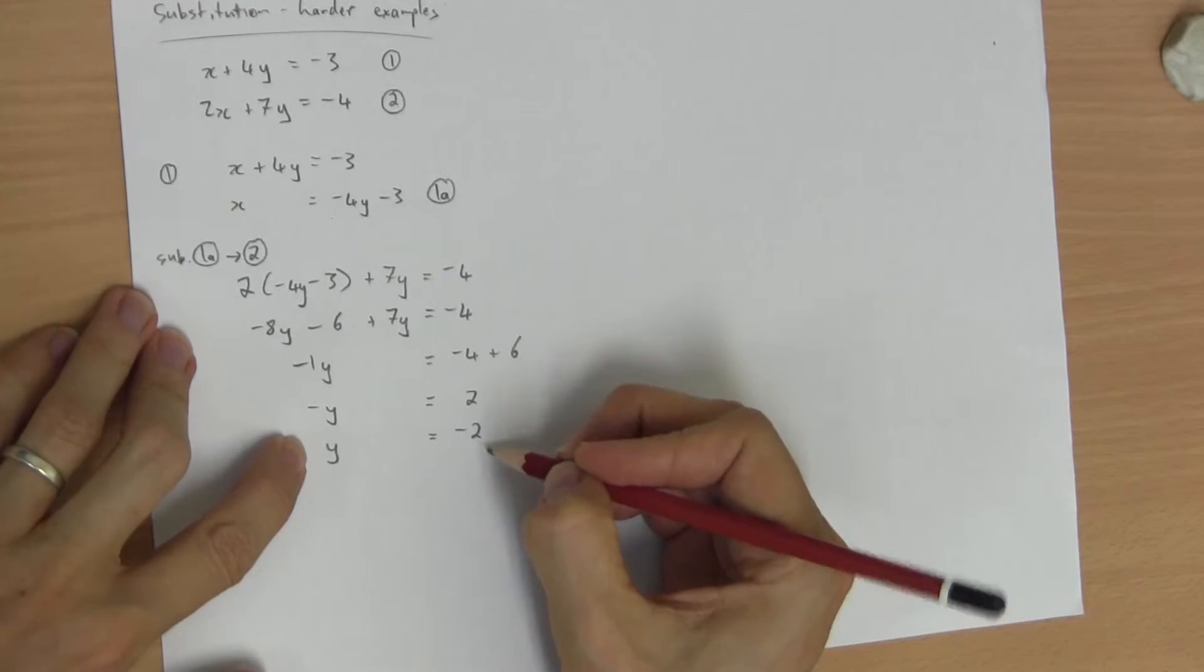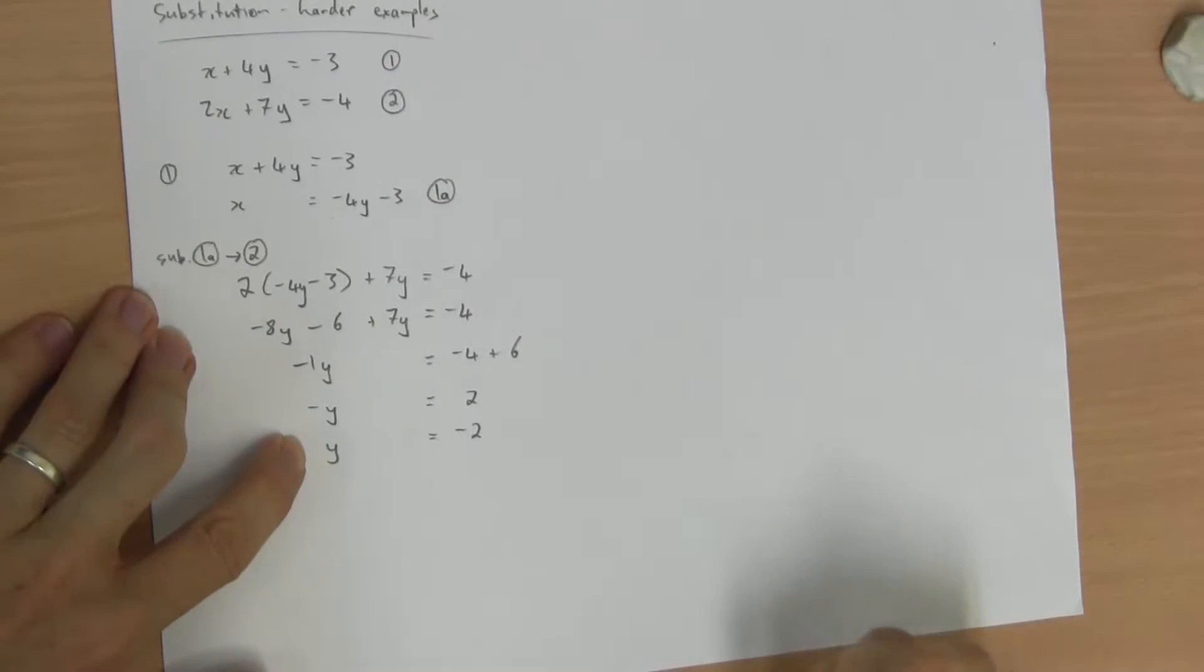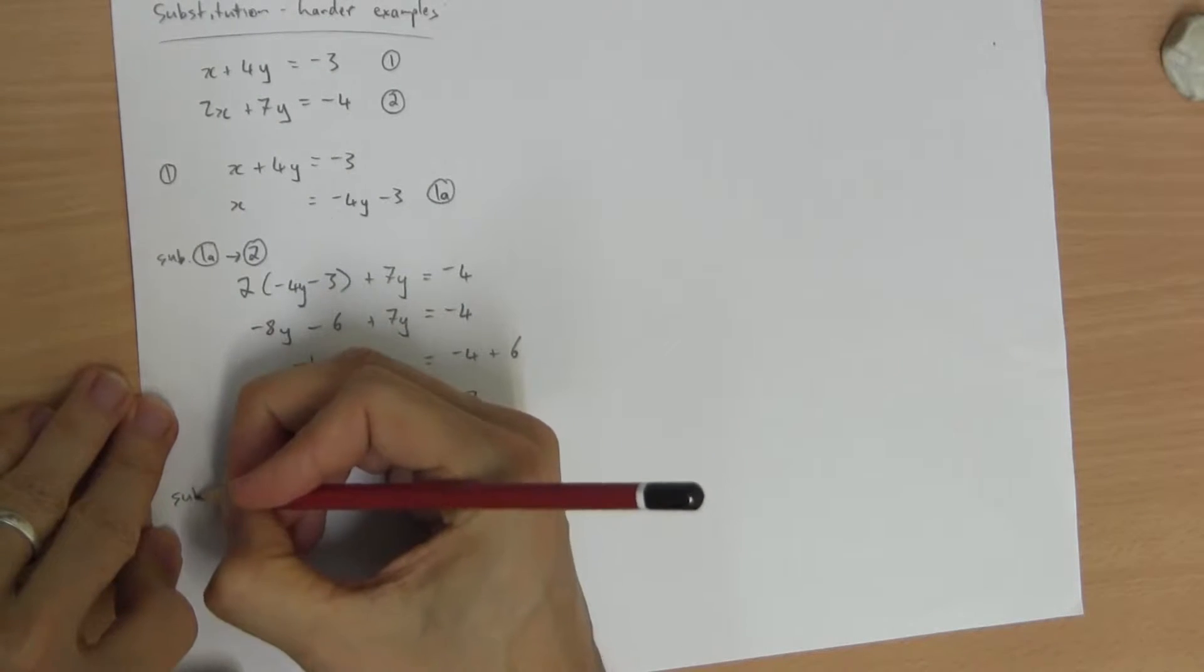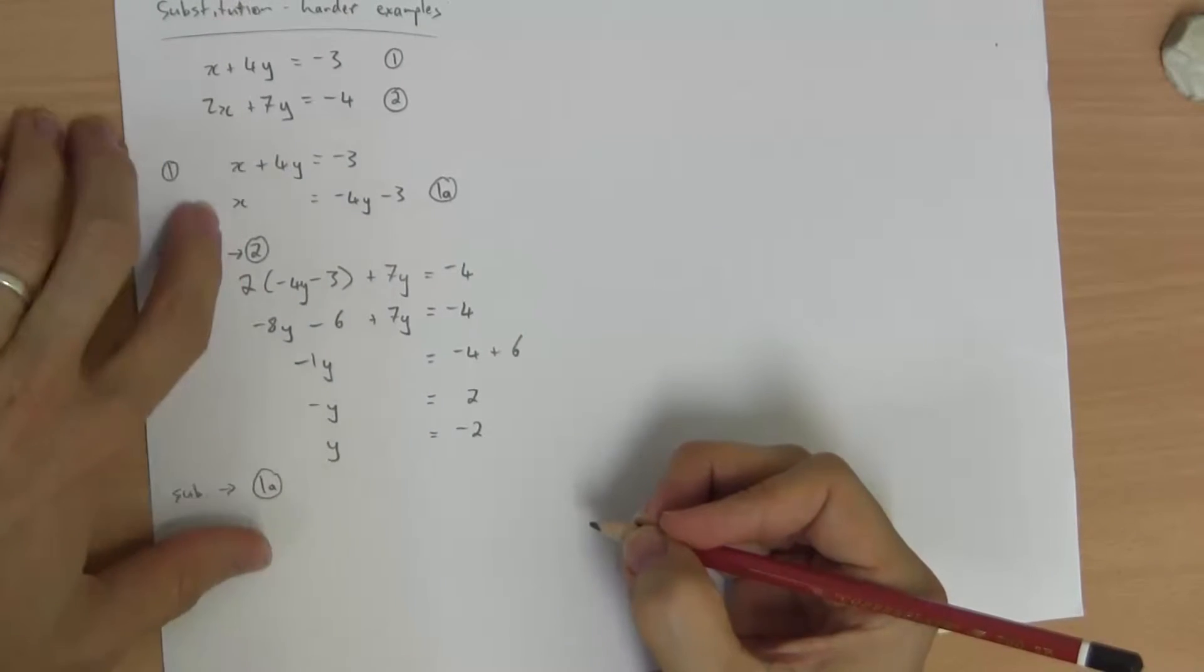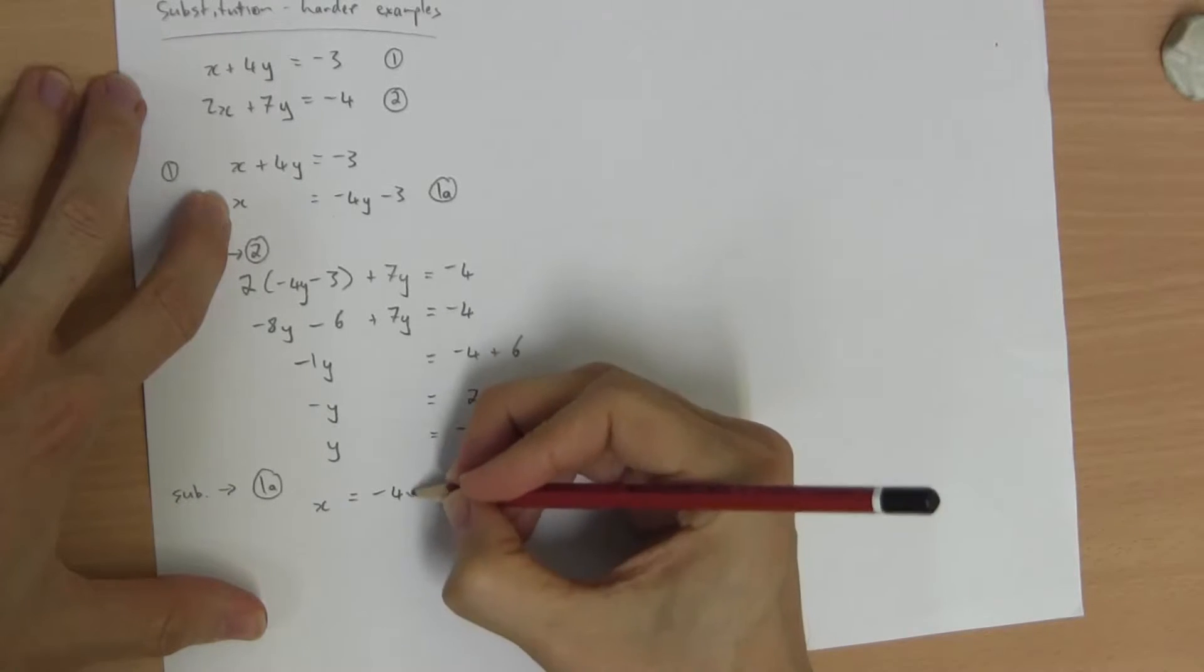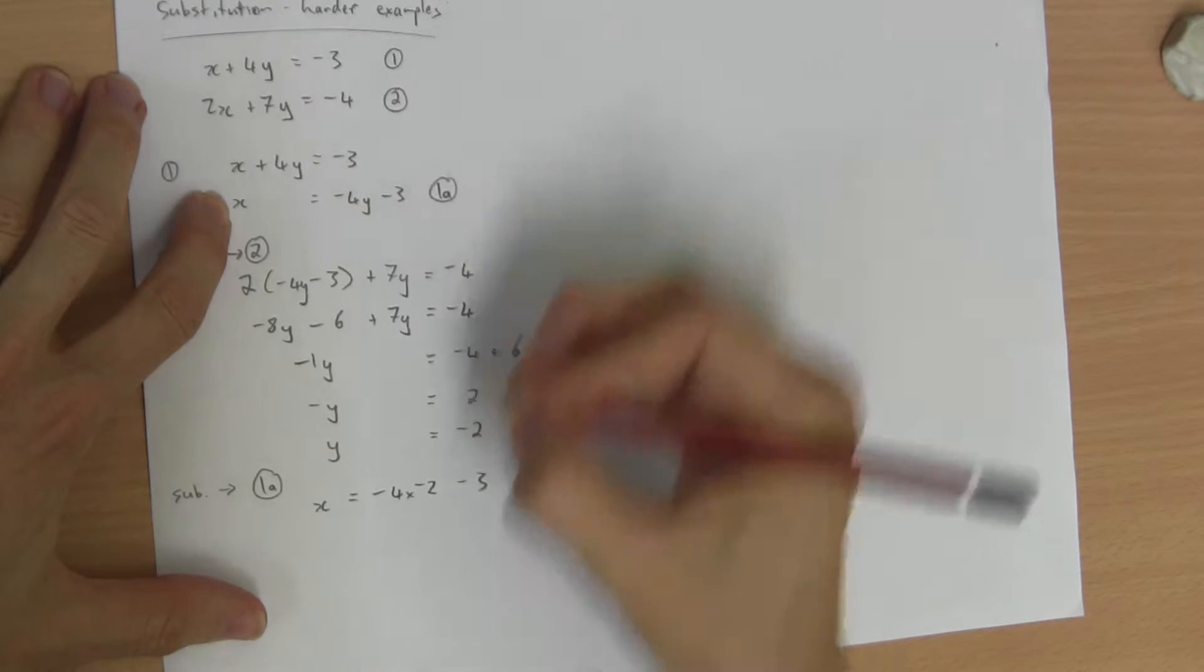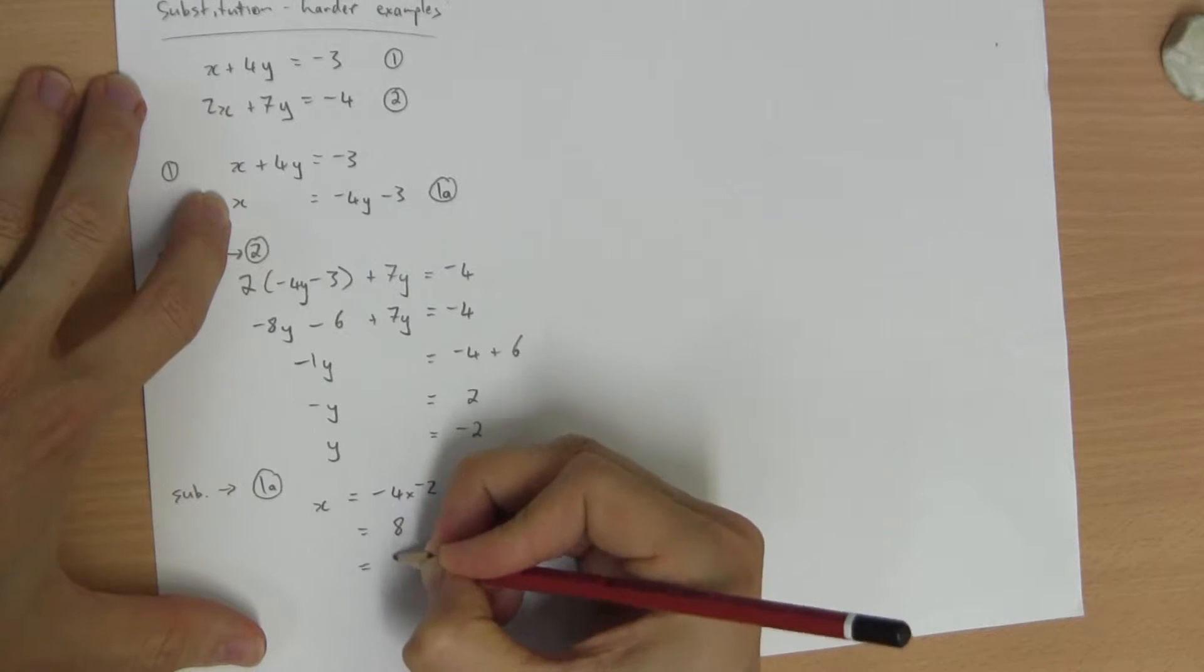Substitute y into an equation up here that will give me a value for x. Well, 1a is going to do that easiest. So let's substitute that into 1a. It says x equals negative 4 times y, negative 2, take away 3, which is positive 8, take 3, which is 5.